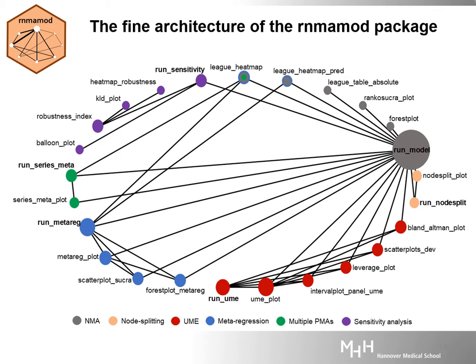This network diagram summarizes all functions of the package responsible for running the models and presenting the results. The RunModel function corresponds to the largest node because it is literally the backbone of the entire RNMA mode architecture. This function conducts Bayesian network meta-analysis while accounting for missing participants using the pattern mixture model. Most functions in the package cannot work without the RunModel function, and on its own, the RunModel function simply returns a bulk of raw results for the model parameters.